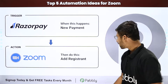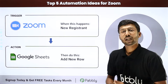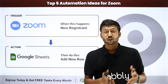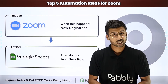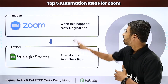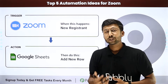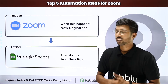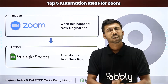Our next automation is Zoom to Google Sheet. Many people are registering for your Zoom webinar or meeting, but you don't actually have data on all of those registrants. You can set up an automation by which whenever a new registrant is added in your Zoom webinar or meeting, their details will automatically be added in a Google Sheet as a new row. Isn't it amazing?